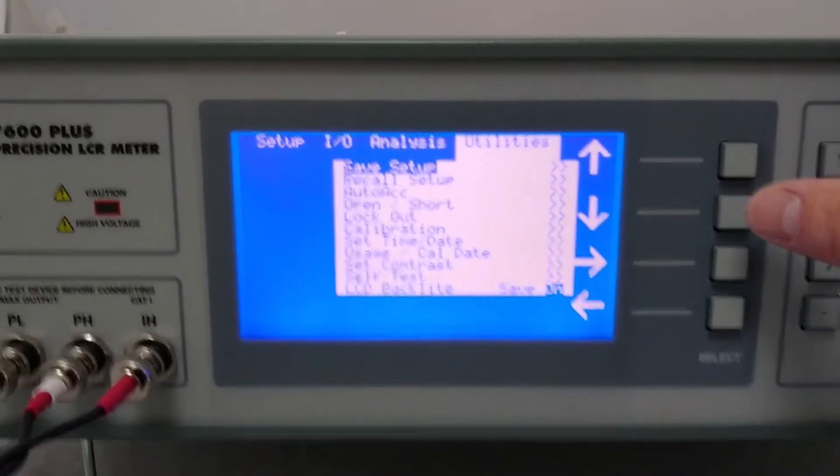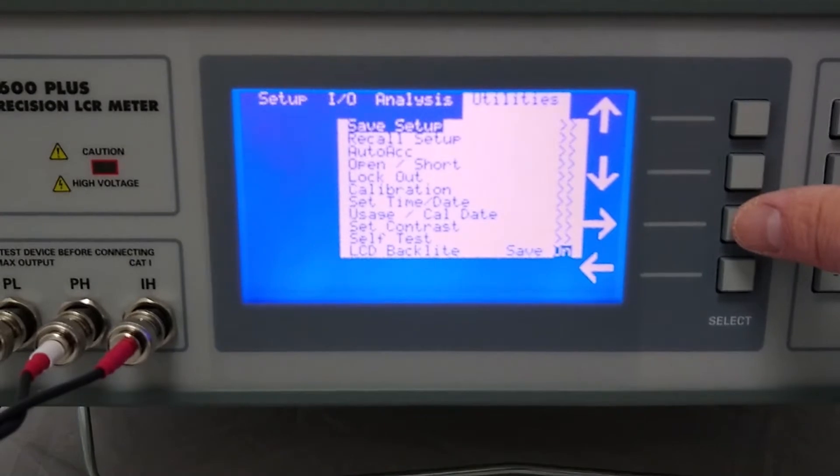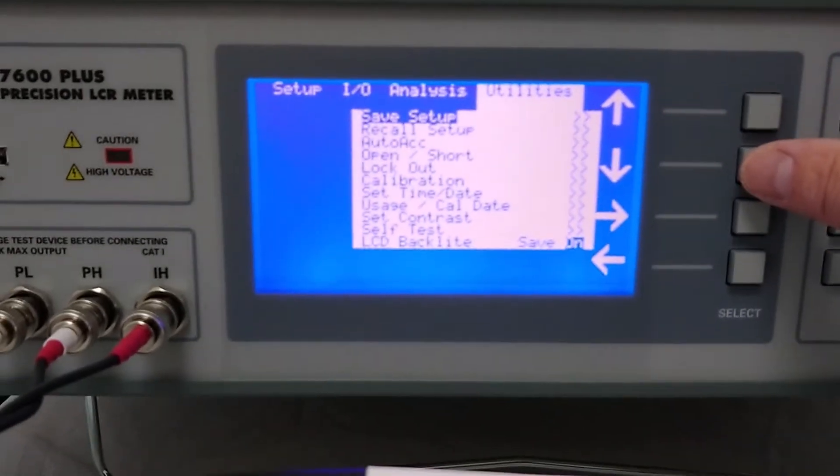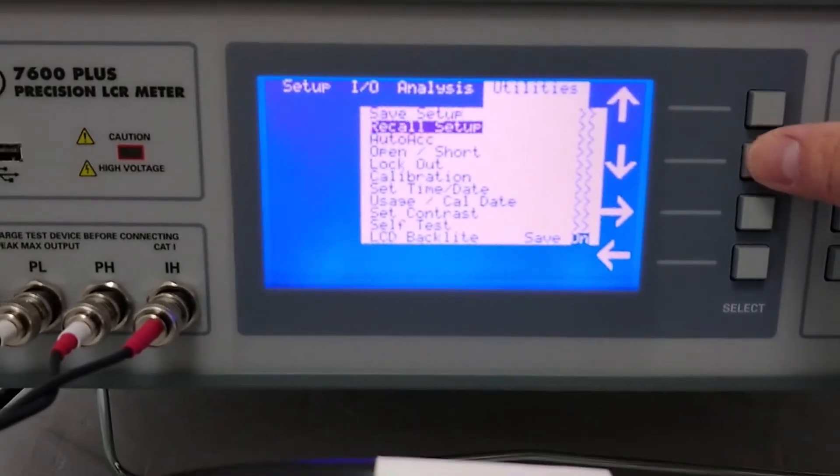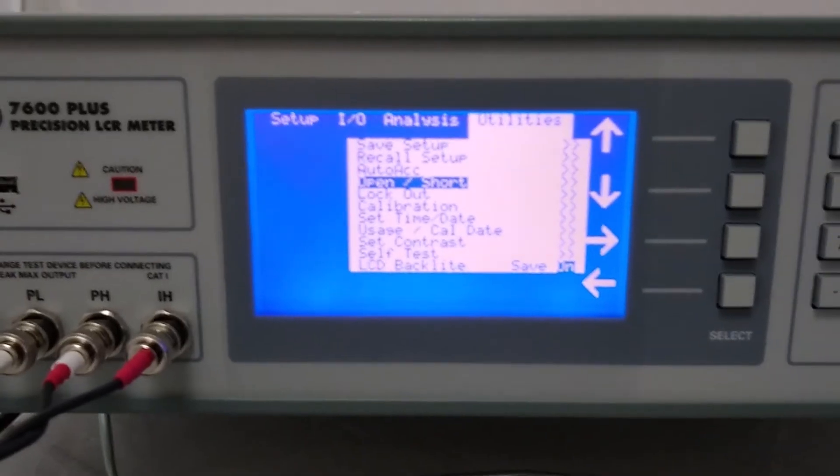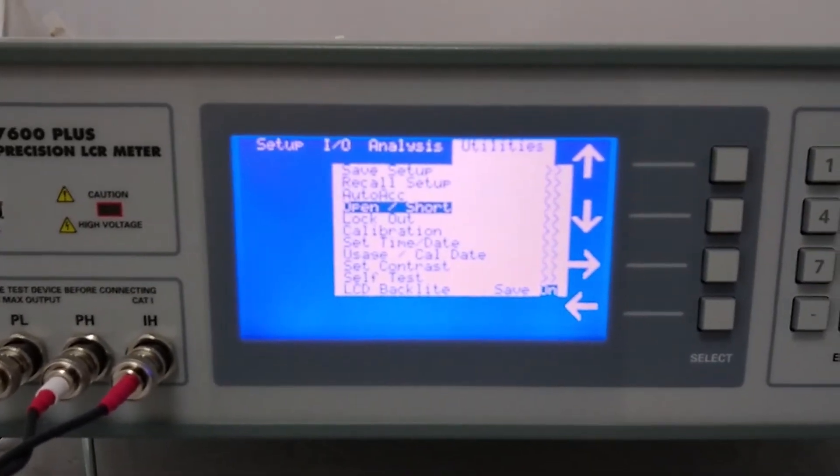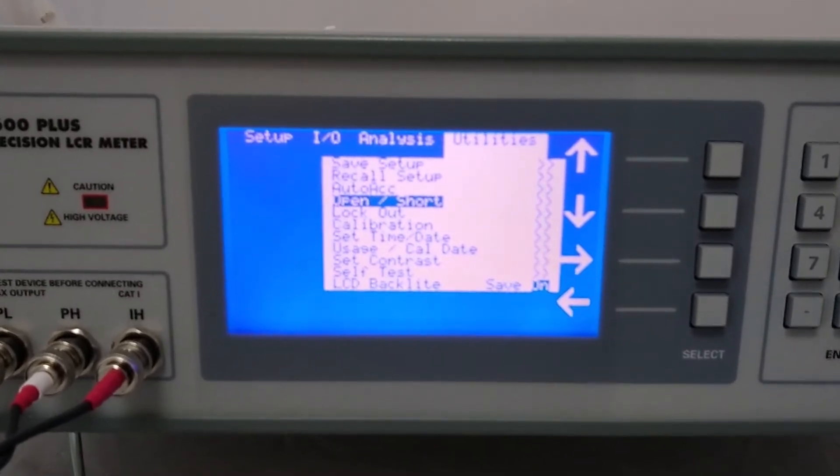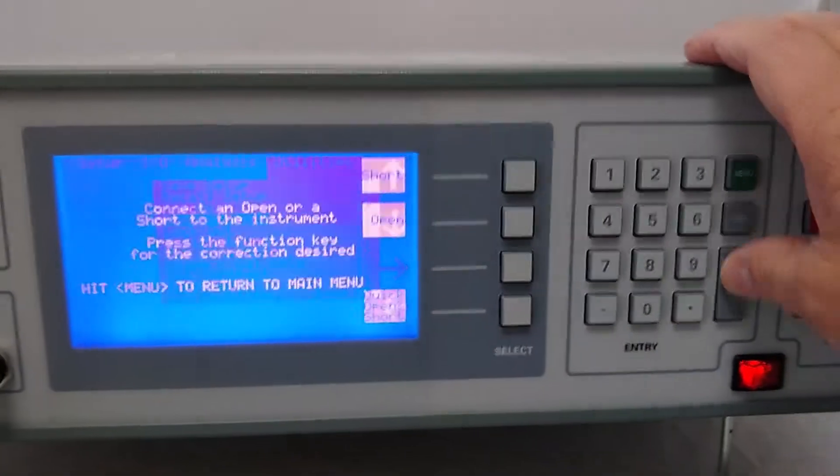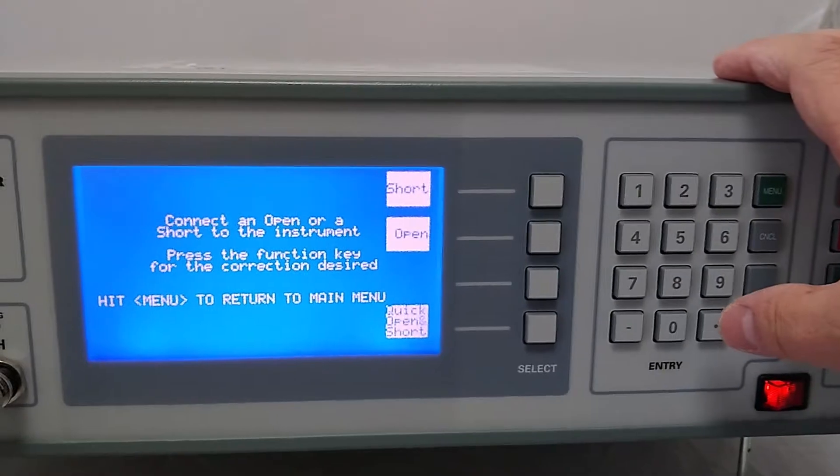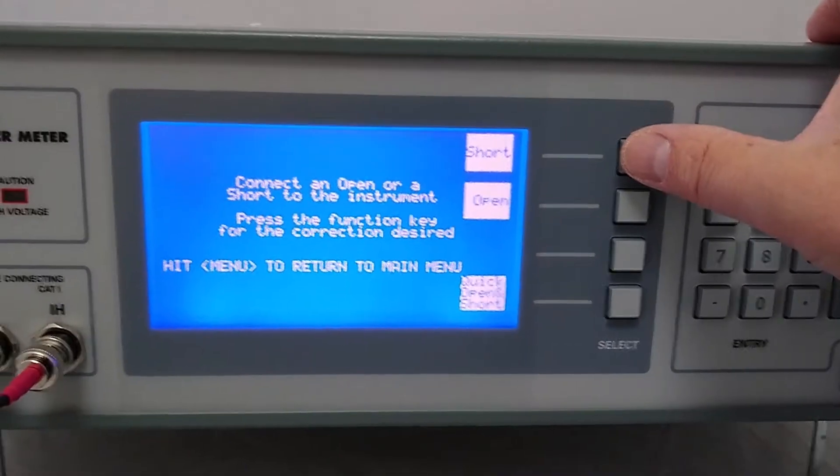This way every time we power the unit on, it will come back to the setup that we want to do. The next step that we're actually going to do is configure the cell to do opens and shorts because we've got to compensate for the cables and the adapters that we have attached to the cell. So we press enter on the open and short. And the first thing we want to do is a short.